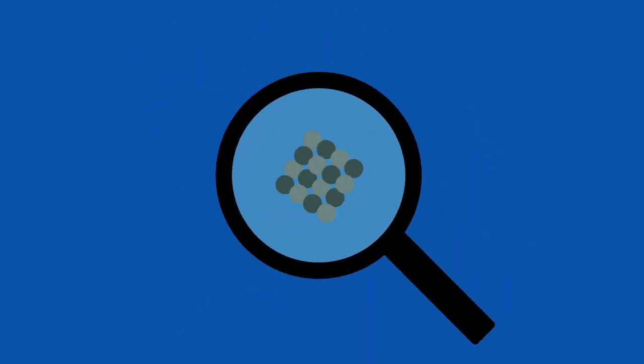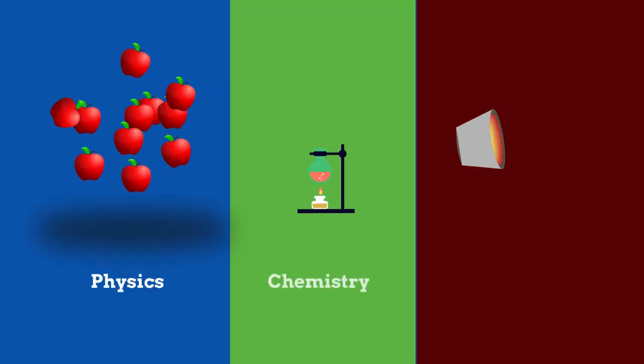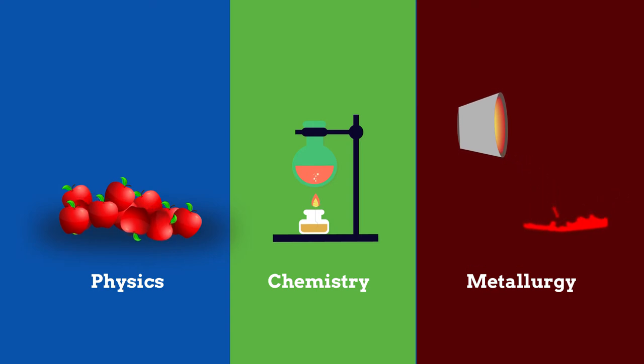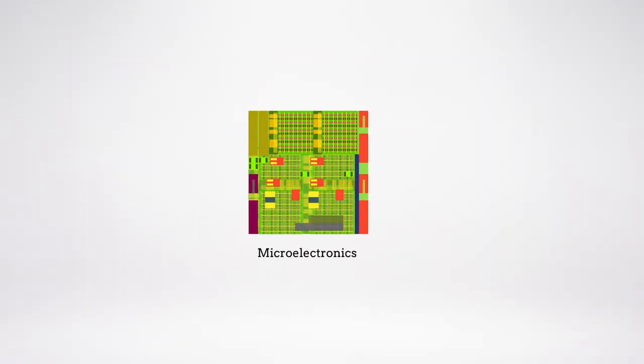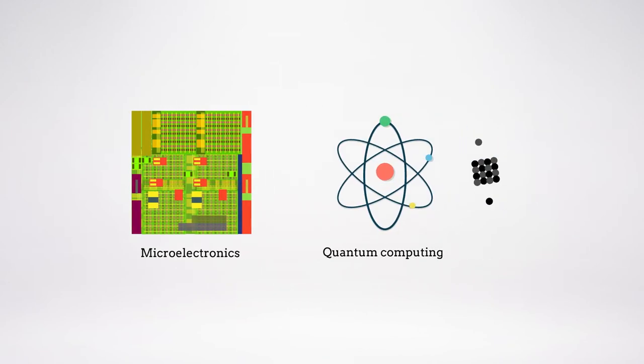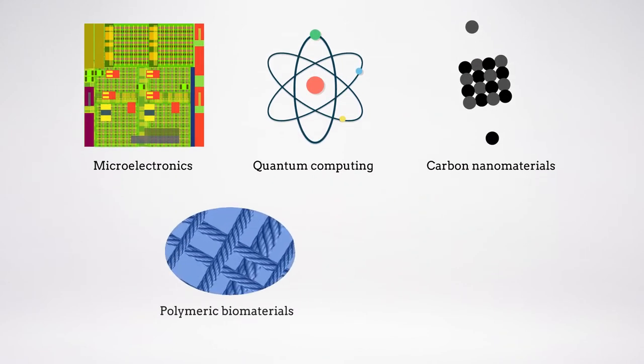Moving toward the nanoscale, the convergence of physics, chemistry, and metallurgy has allowed the silicon age to flourish, paving the way for innovations in microelectronics, quantum computing, carbon nanomaterials, polymeric biomaterials, and energy storage materials.